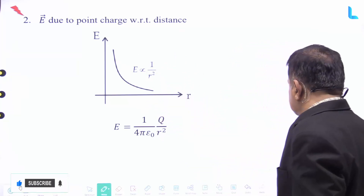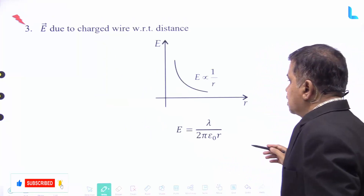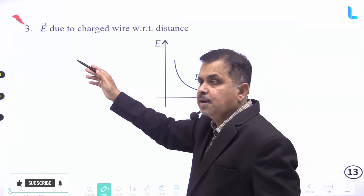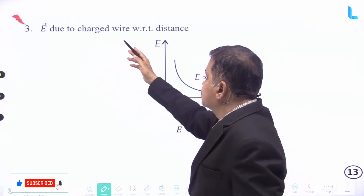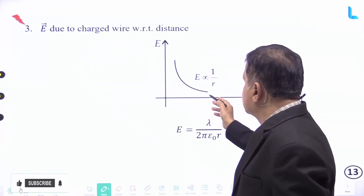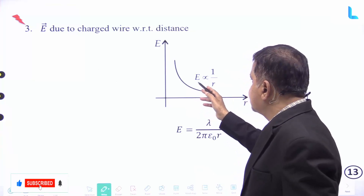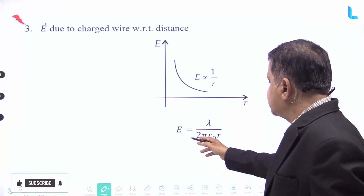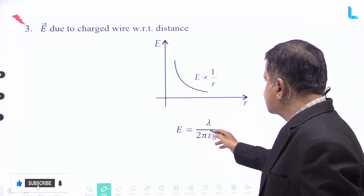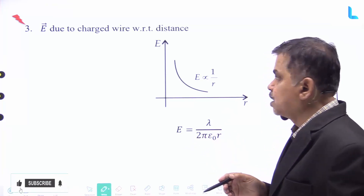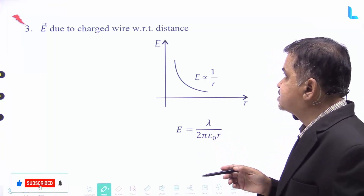One more graph is for E due to a charged wire with respect to distance, where E is inversely proportional to r, and E is given by lambda divided by 2 pi epsilon naught into r.